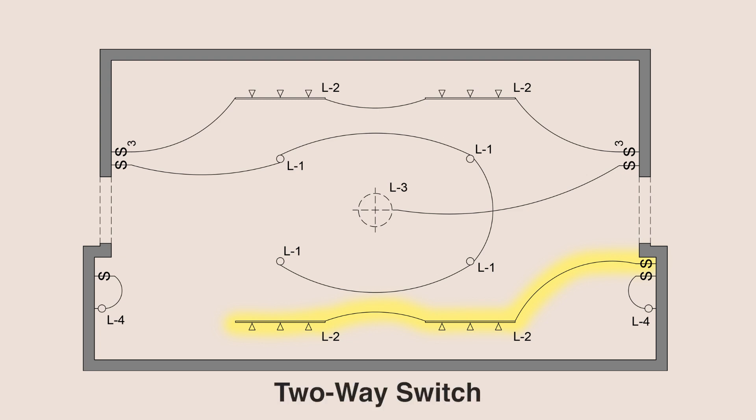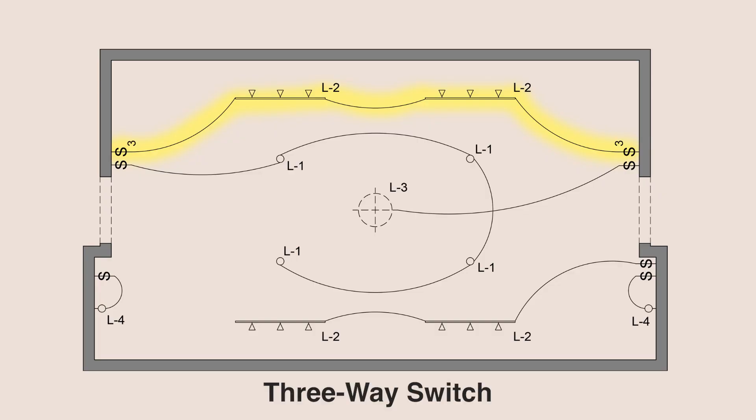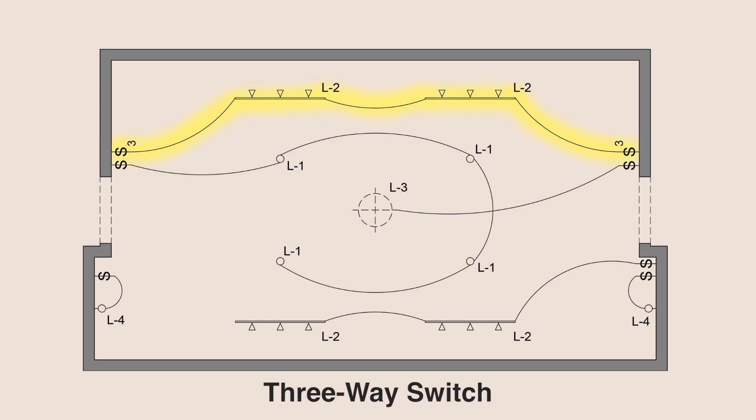These track lights on the same circuit are controlled by one single switch — this is called a two-way switch, or sometimes referred to as a single pole switch. In the case where you have two entrances in a room, say on opposite ends, you can have two light switches, one at each door, which would be a great idea so users can access the lights from both entry points. Some other good locations for two switches are at the top and bottom of a staircase and at either end of a really long hallway. This would be called a three-way switch. These terms can be confusing because they don't refer to the number of switch locations — they instead refer to the number of conductors required to make switching possible.